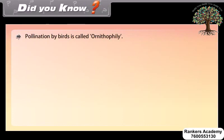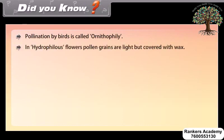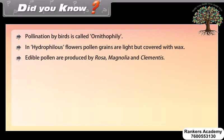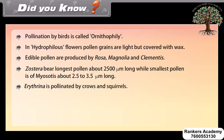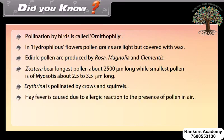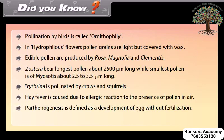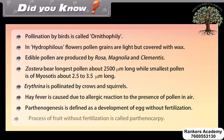Did you know? Pollination by birds is called ornithophily. In hydrophilous flowers, pollen grains are light but covered with wax. Edible pollen are produced by Rosa, Magnolia, and Clematis. Zostera bears the longest pollen, about 2500 micrometers long, while the smallest pollen is of Myosotis, about 2.5 to 3.5 micrometers long. Erythrina is pollinated by crows and squirrels. Hay fever is caused by an allergic reaction to the presence of pollen in the air. Parthenogenesis is defined as the development of an egg without fertilization; the process of fruit formation without fertilization is called parthenocarpy.